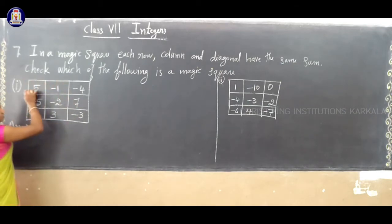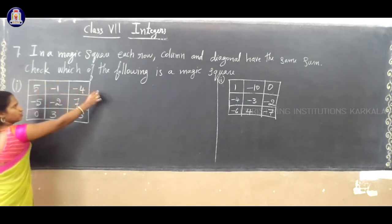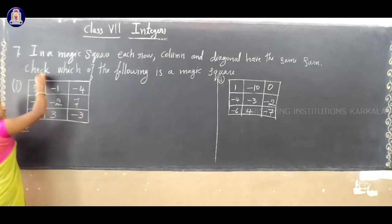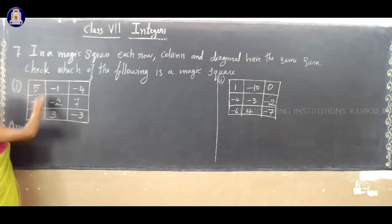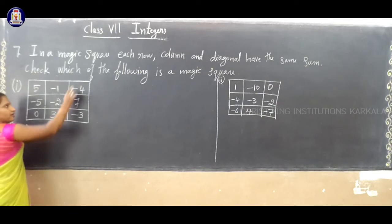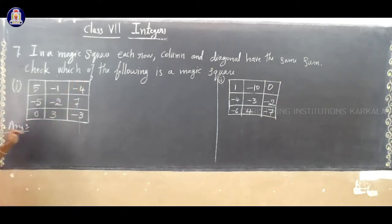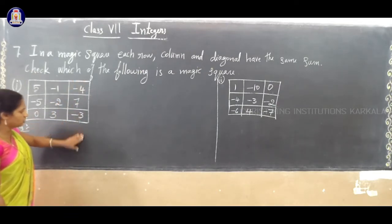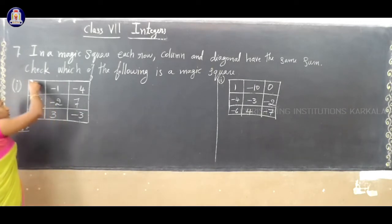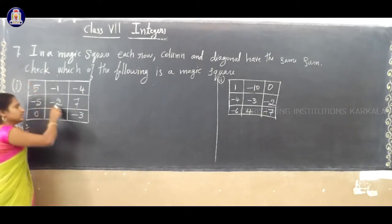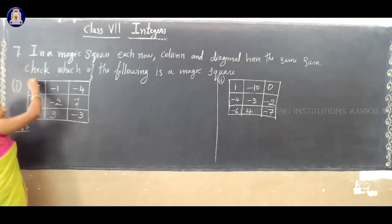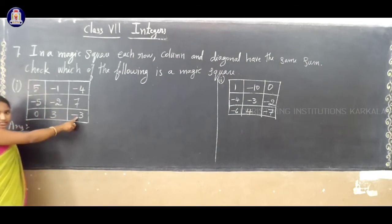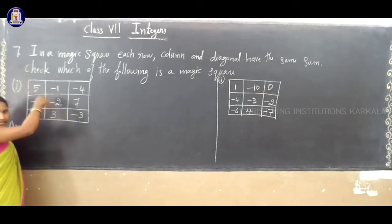This is the first row, second row and third row. Then you have to add the columns — first column, second column and third column. So, you have to add each row, add each column, and similarly you have to consider the diagonal. So, this is a diagonal: 5, minus 2, minus 3. These numbers form a diagonal.